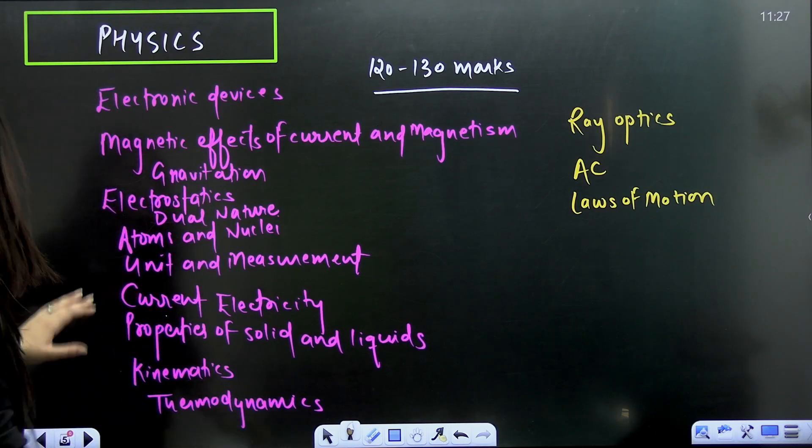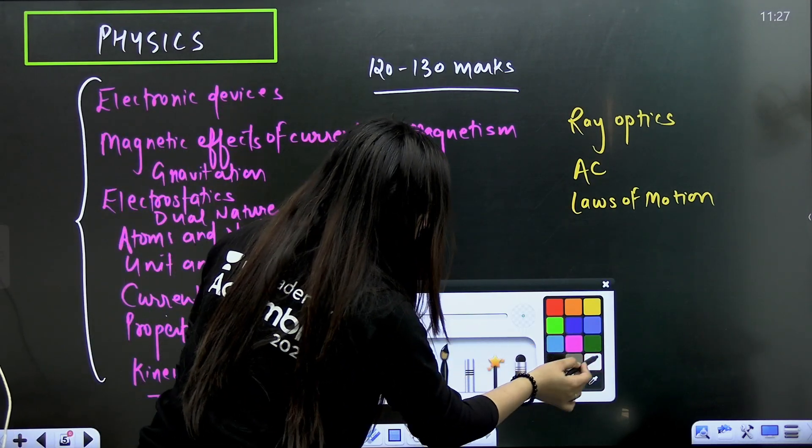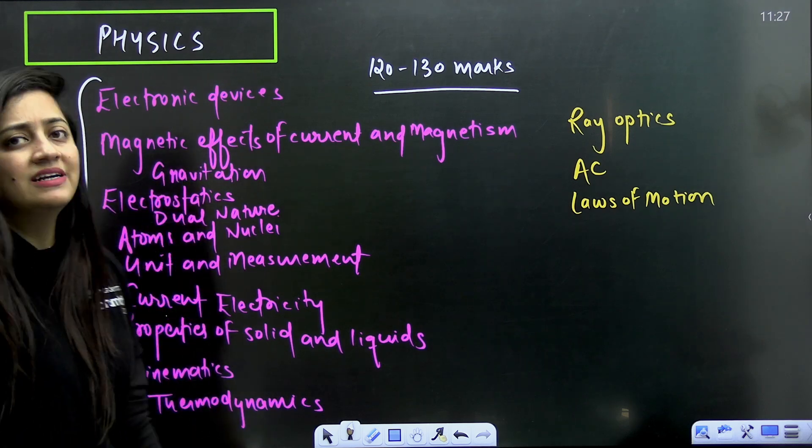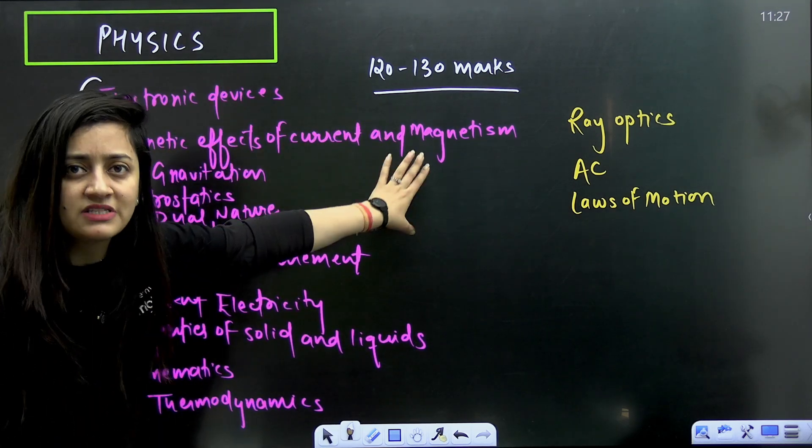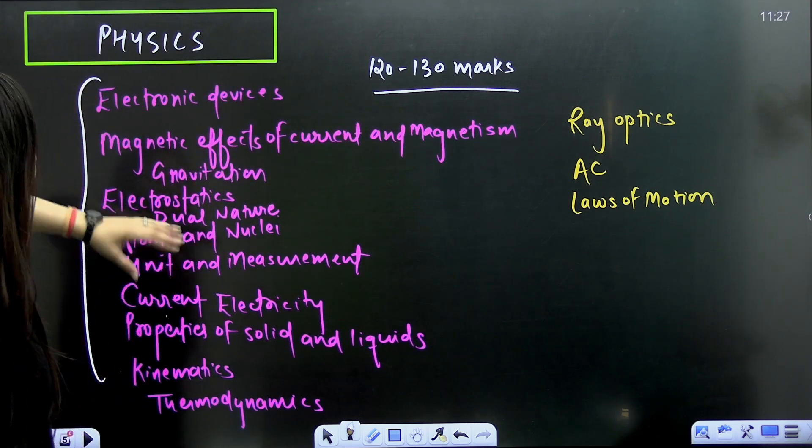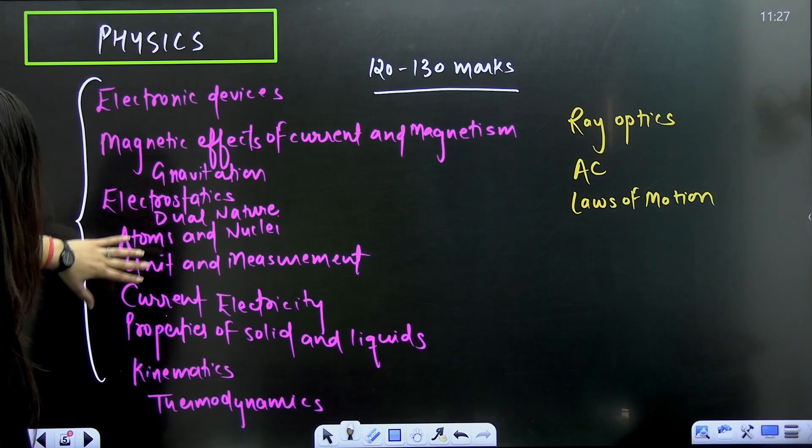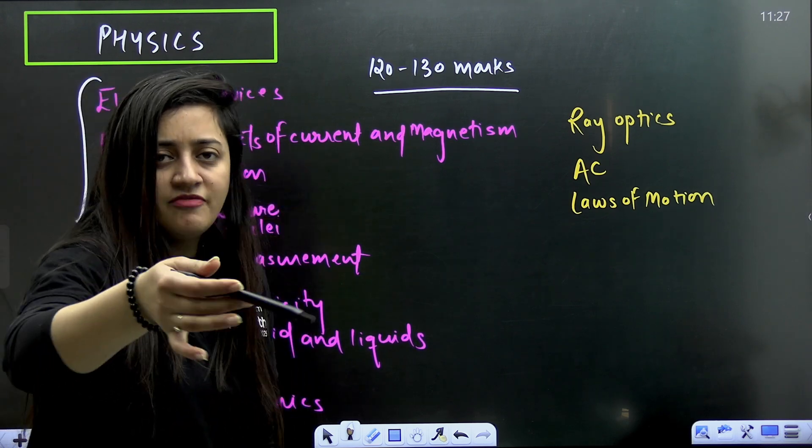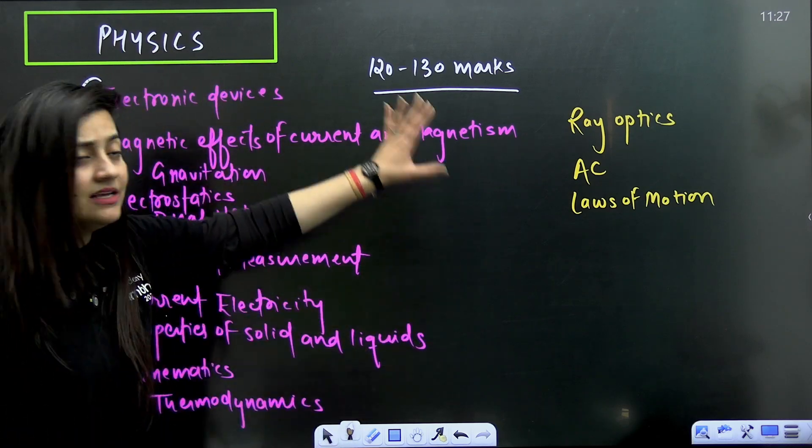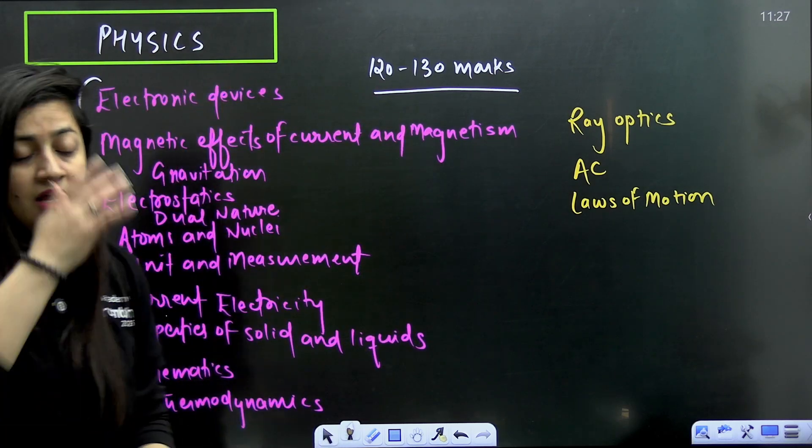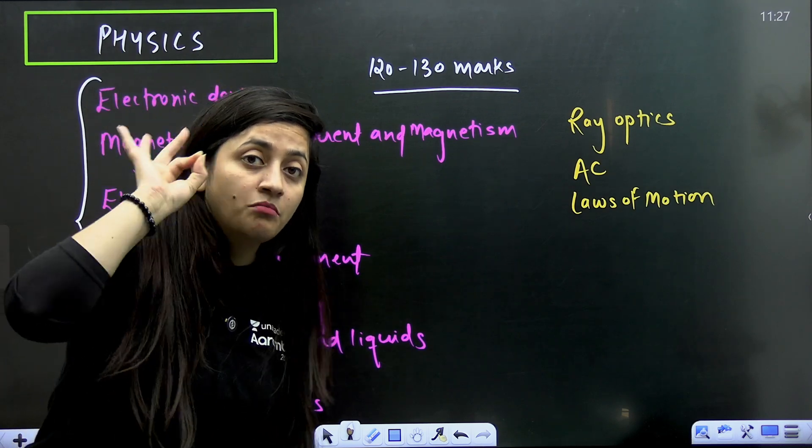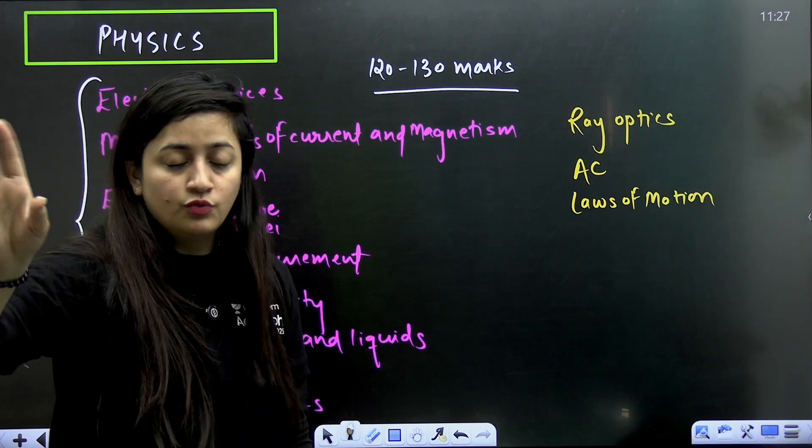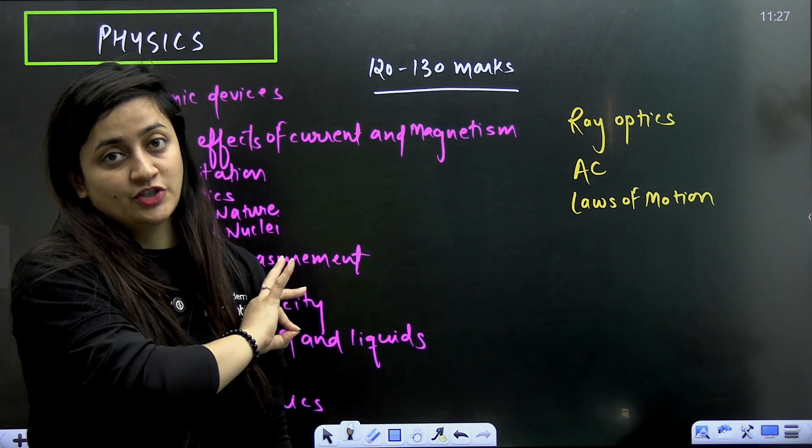Then let's talk about physics. Again, 120 to 130 marks you guys can get from this particular part. But if you have completed ray optics, current electricity, electrostatic units like this, otherwise they are very direct. Even if your physics is weak, if you will complete electronic devices, magnetic effects of current and magnetism, dual nature, atoms and nuclear, unit and measurement, then you can get 90 marks. But if you will complete these chapters and particularly the most important topics out of it, you can definitely score marks in the range of 110 to 130. But the point is you have to practice the questions.